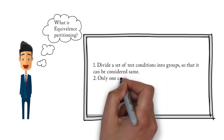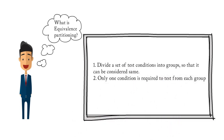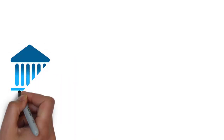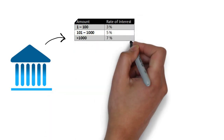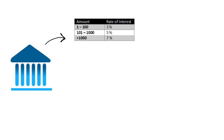Let's see an example. There is a bank ABC which offers a fixed deposit product to customers. The rate of interest for the FD product is dependent on the amount the customer puts in their FD account. As you can see from the table: for one to two hundred dollars the rate of interest offered is three percent; for one hundred and one to one thousand dollars the rate is five percent; and above one thousand dollars the interest rate is seven percent.